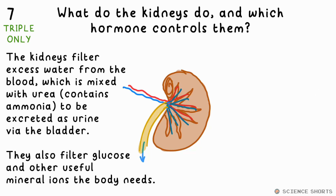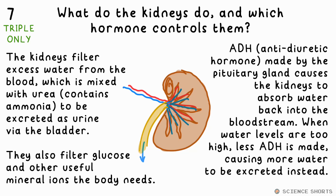Your kidneys remove excess water from the blood. It's mixed with urea, which contains ammonia, to make urine, which is then excreted via your bladder. They also filter out glucose and other useful mineral ions for your body to use. ADH, or antidiuretic hormone, from the pituitary gland causes the kidneys to reabsorb water into the bloodstream. If your water levels are too high, less ADH is made and more water goes to the bladder.